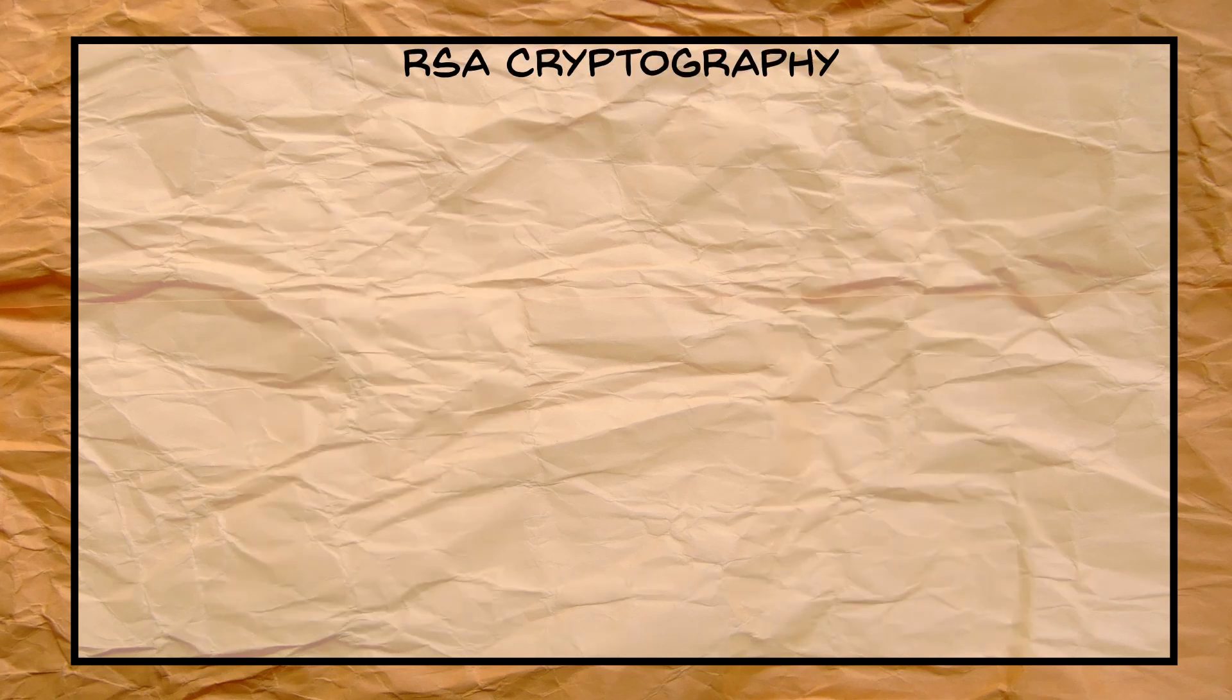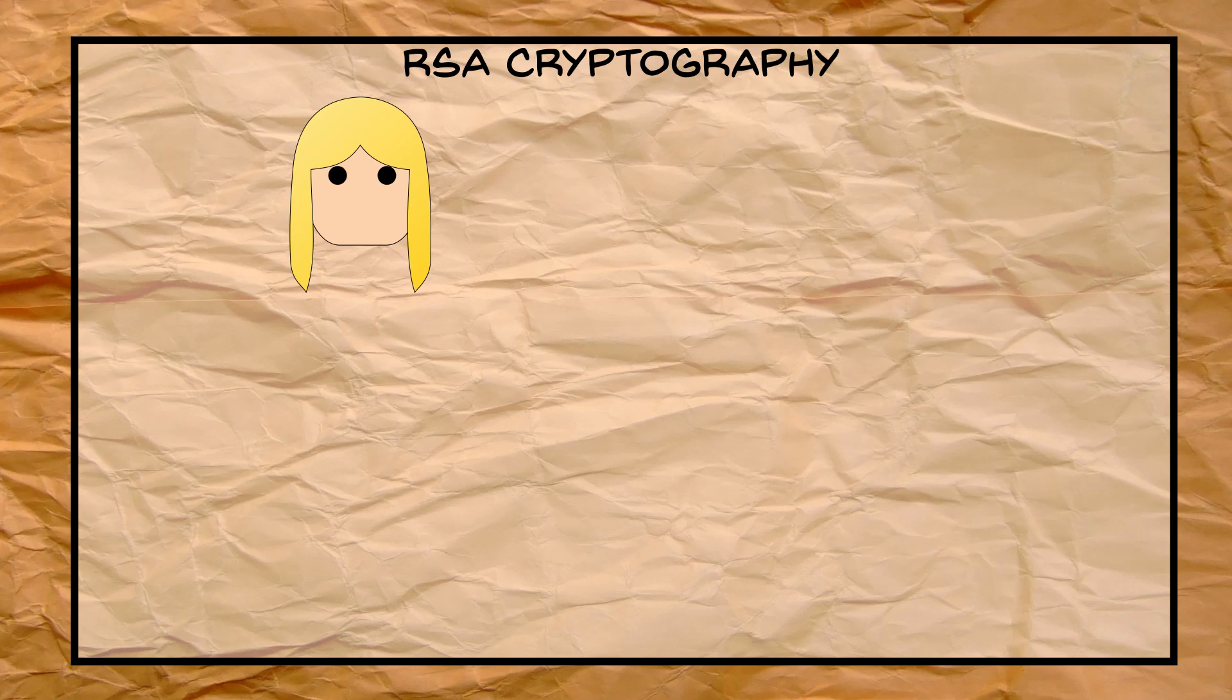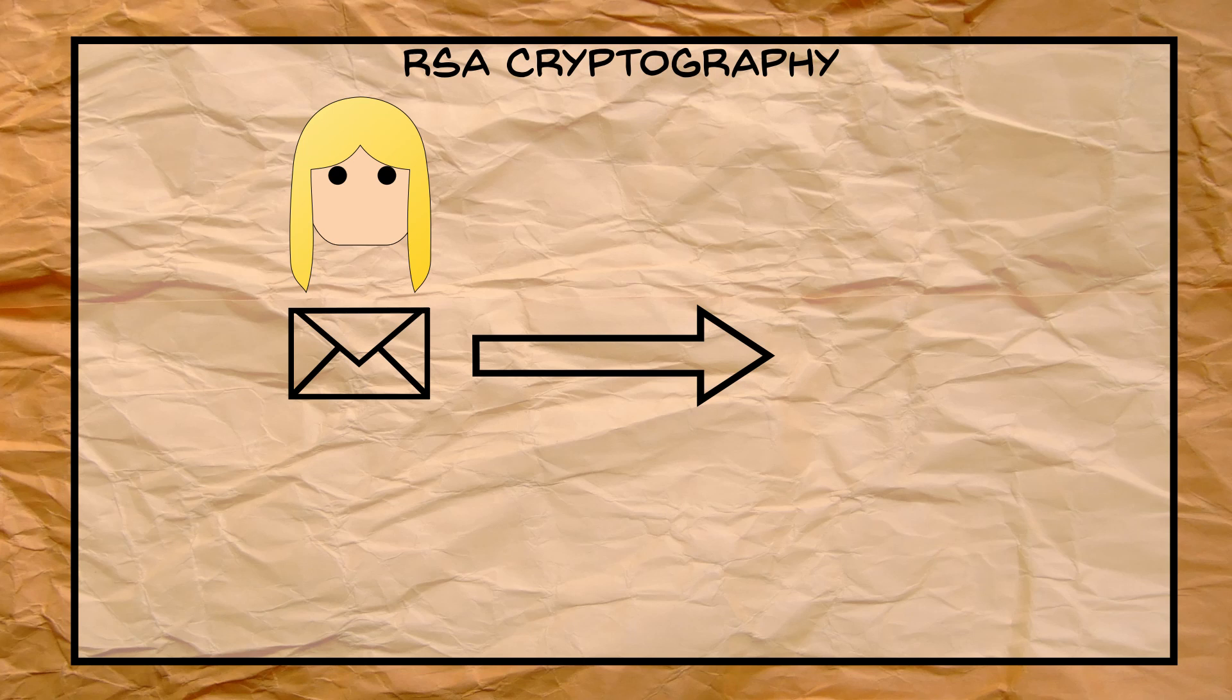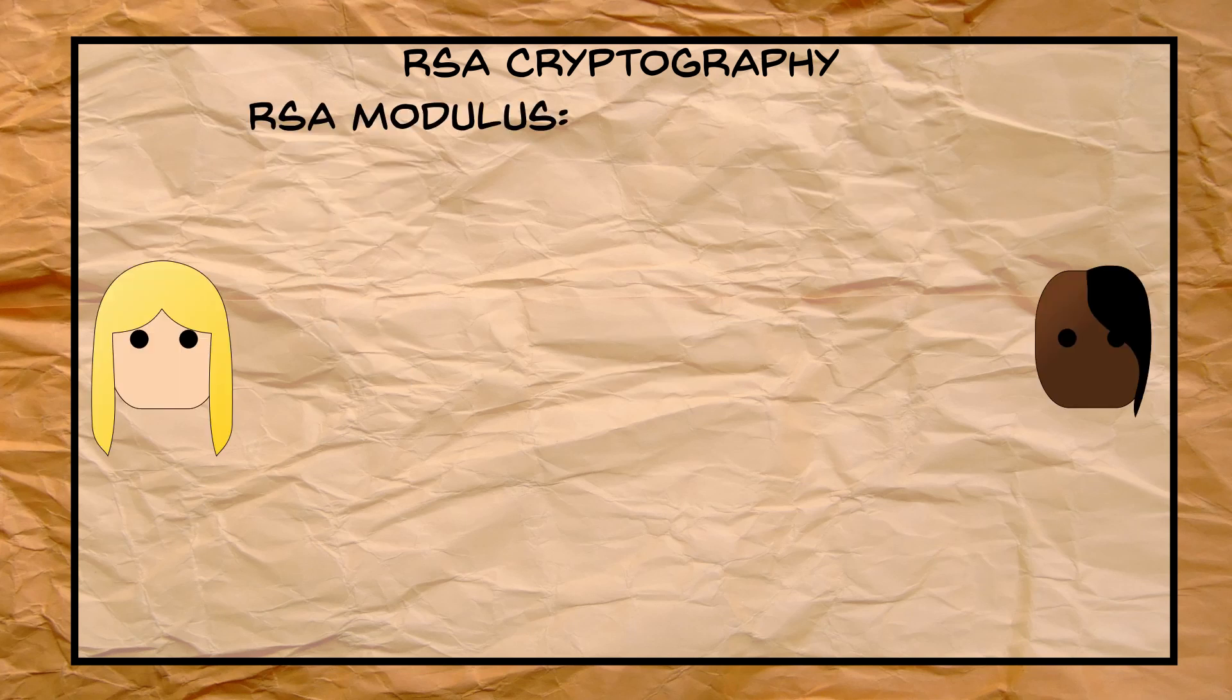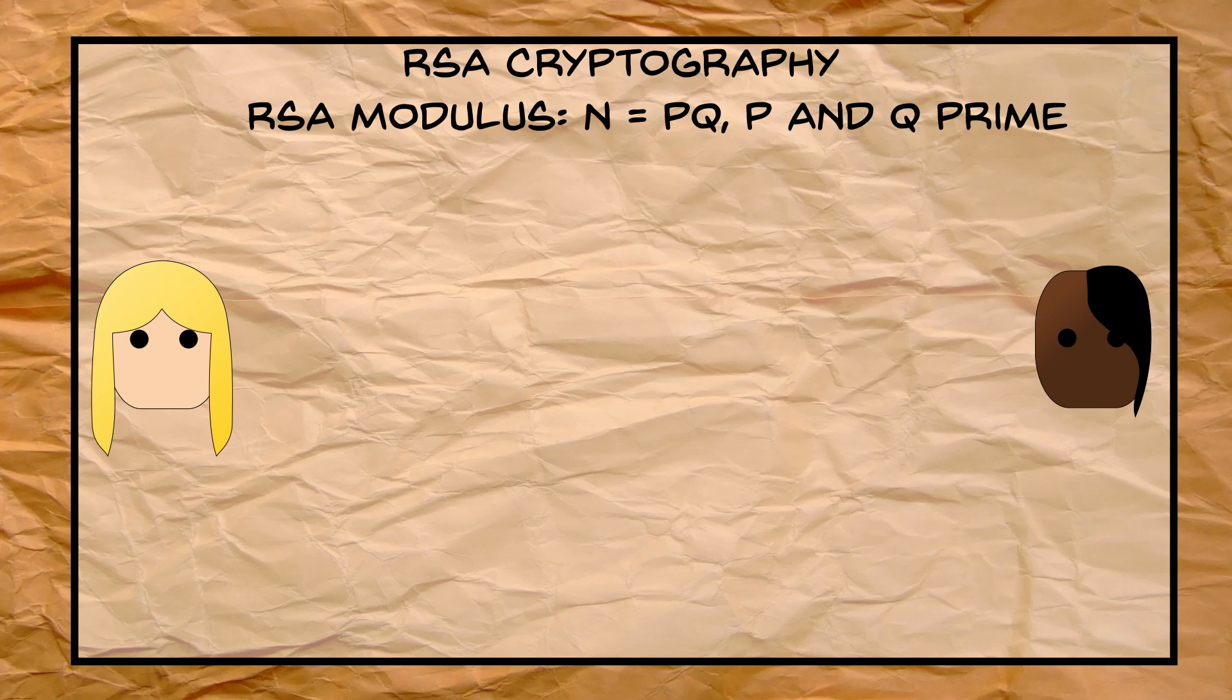Now we turn to RSA. This is Alice. As with all cryptography, Alice wants to send a message secretly to another person. Let's say that the message she wants to send is m and she wants to send it to Bob. Then, to do so with RSA, we generate an RSA modulus, such as RSA 2048, by choosing two primes, p and q, and multiplying them together.